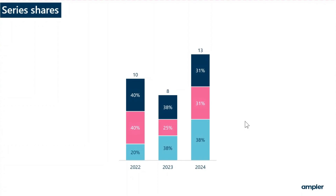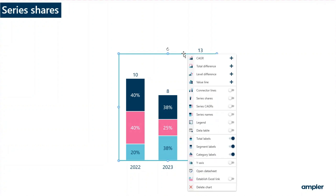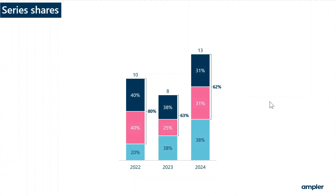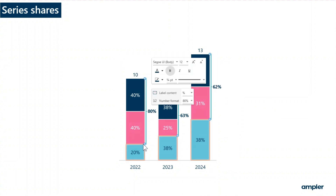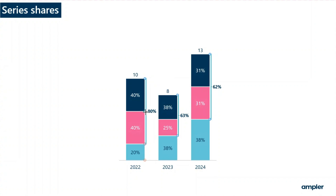To emphasize share of multiple series, you can add series shares. To add series shares, right click on the chart and toggle on series shares from the context menu. To change which series are included, select the series shares and drag the blue handle.